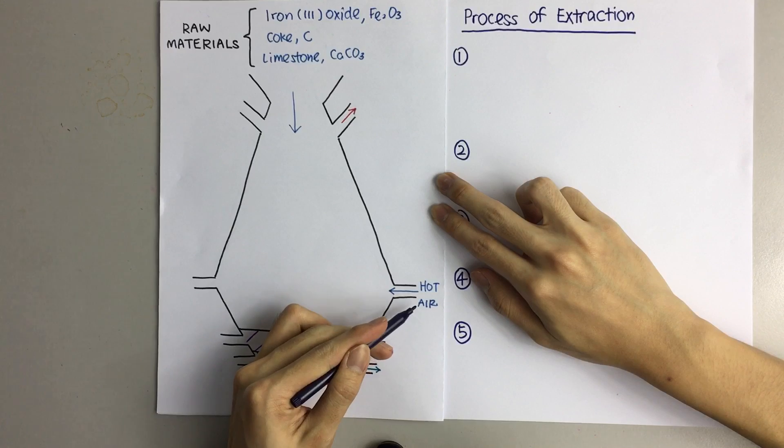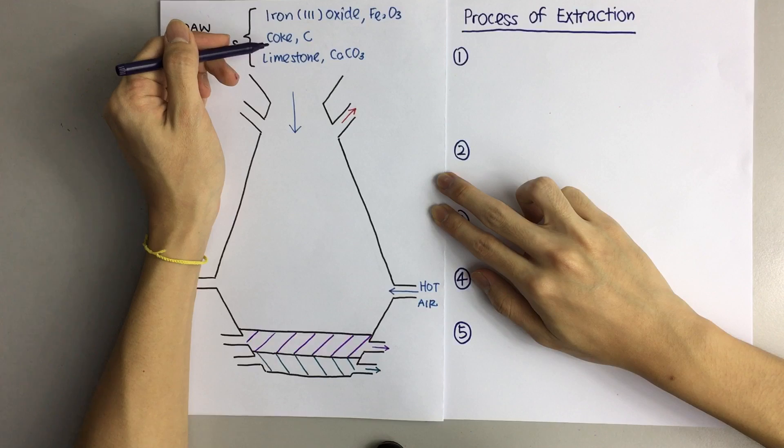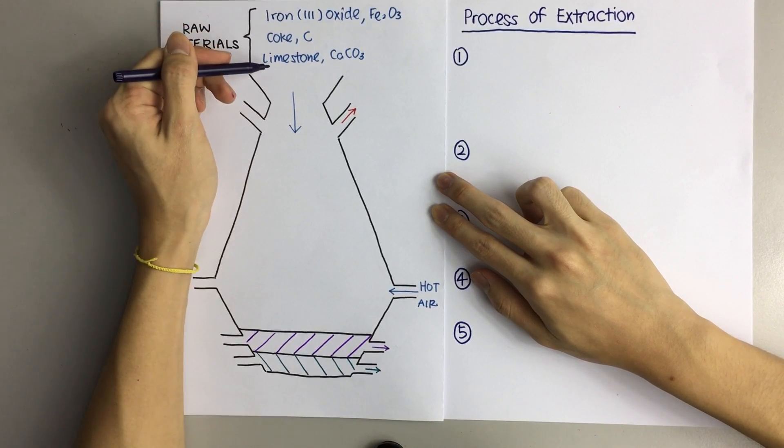Hot air enters the blast furnace here, while your three other raw materials which is iron 3 oxide, coke or carbon, and limestone enters from the top.